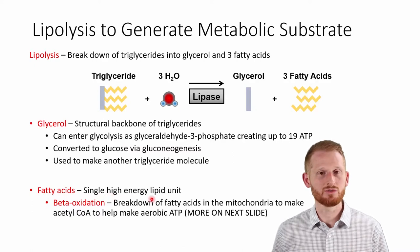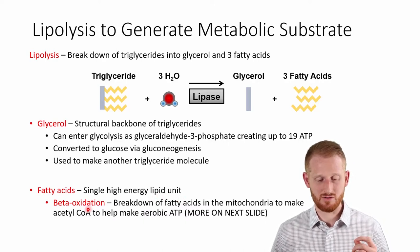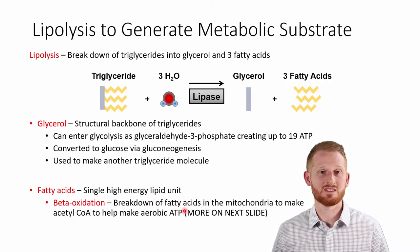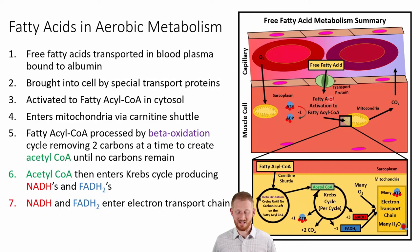The fatty acid molecules are the energy-containing lipid units within the body. These eventually go into beta oxidation, where the fatty acids are broken down within the mitochondria into acetyl-CoA in order to make ATP. Fatty acids are first transported through the blood bound primarily to albumin, then brought into the cell through specialized transport proteins. Once inside the cell, the fatty acid is converted into its activated form of fatty acyl-CoA in an energy-intensive process that breaks down one ATP molecule into ADP.